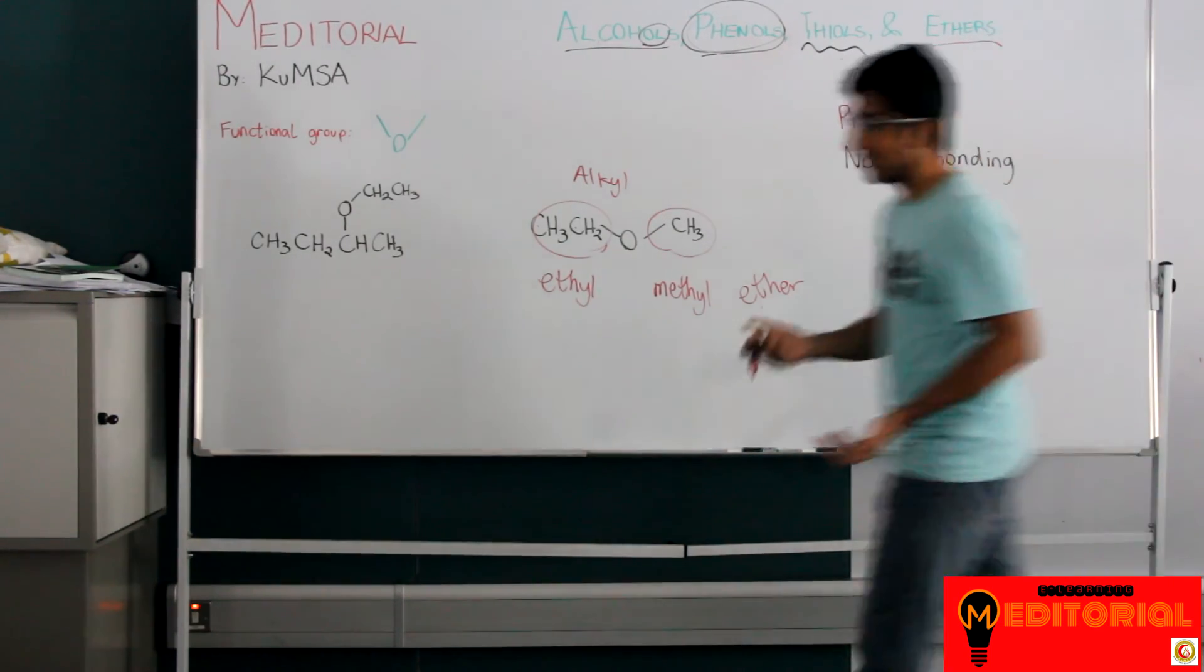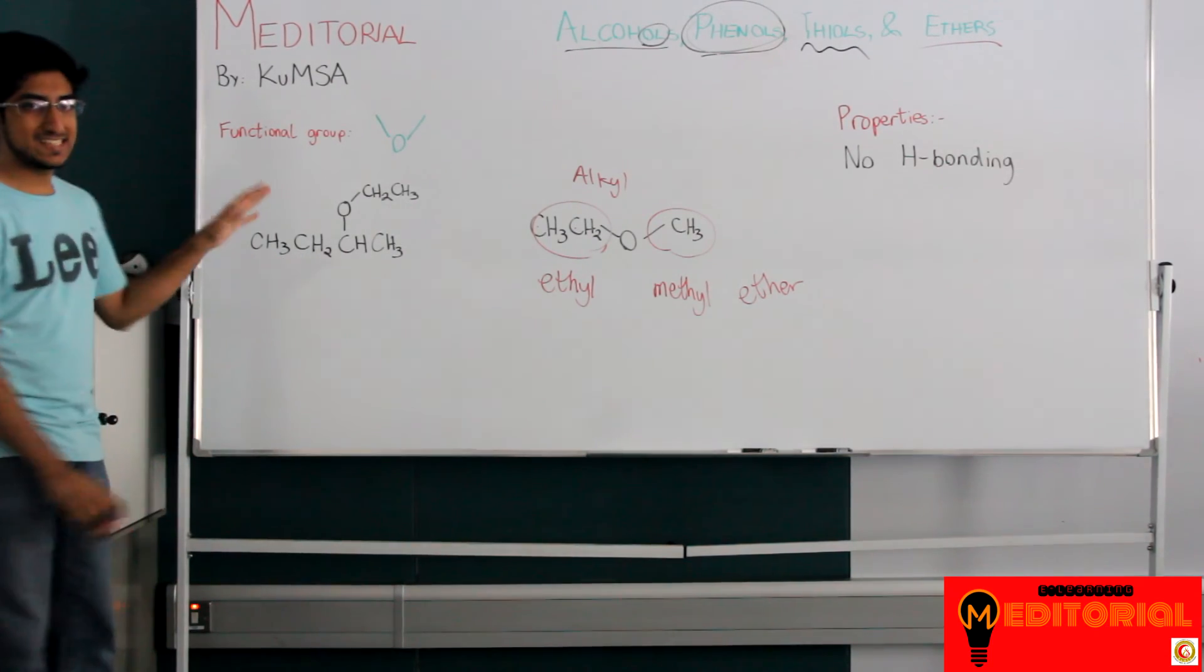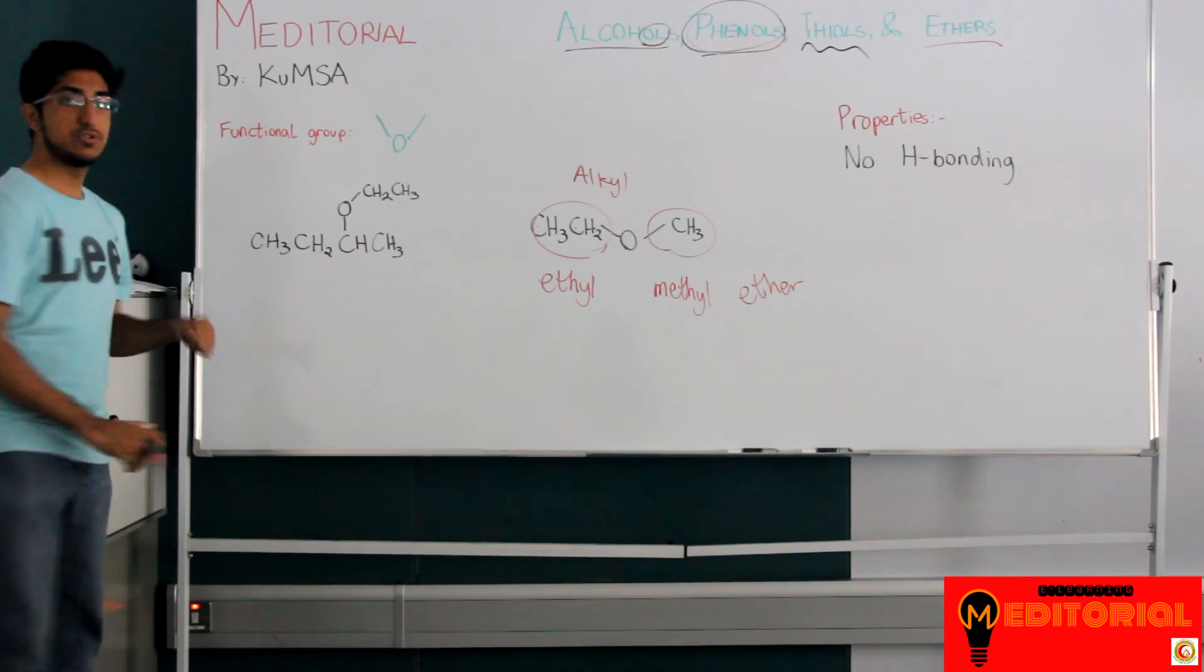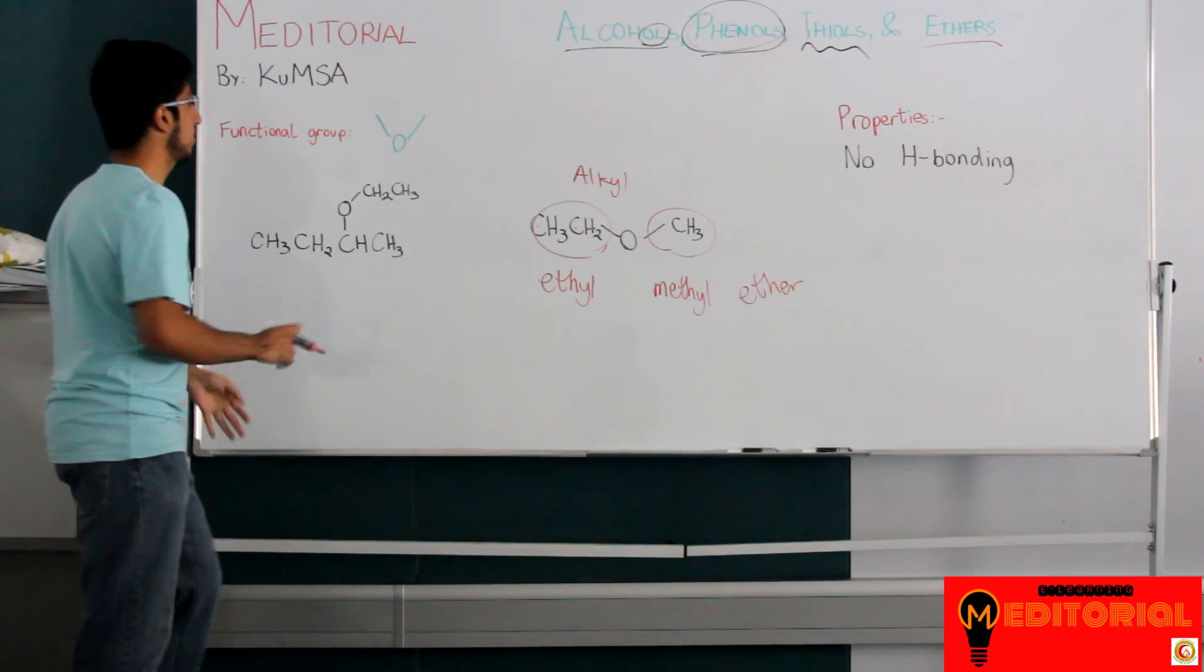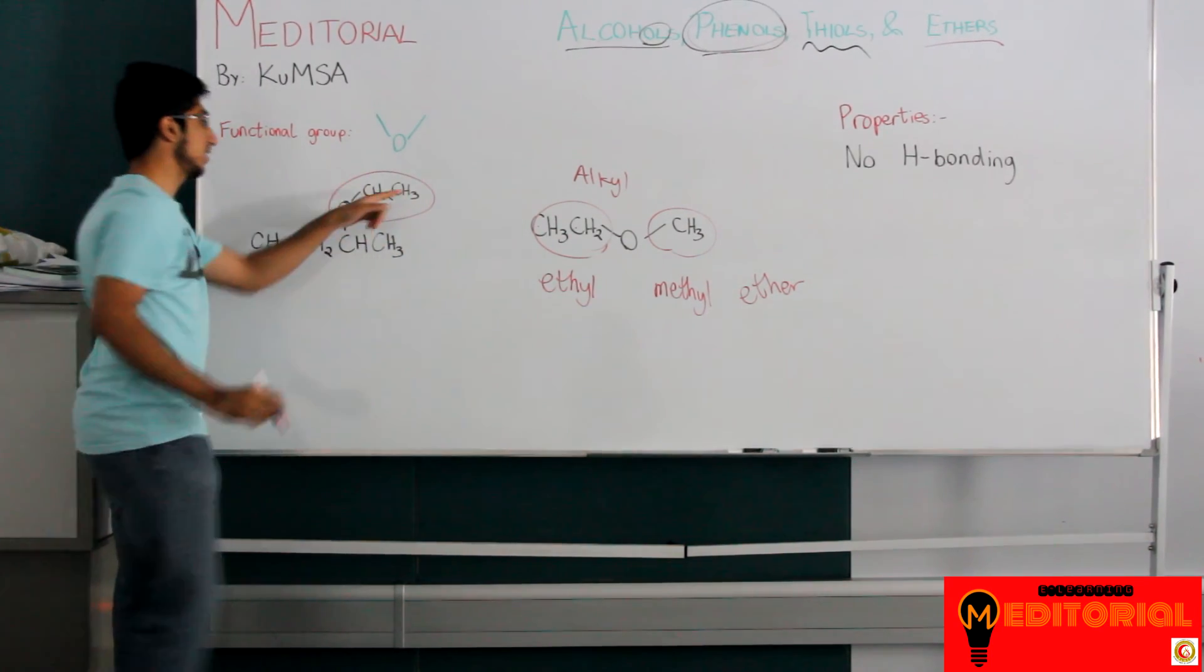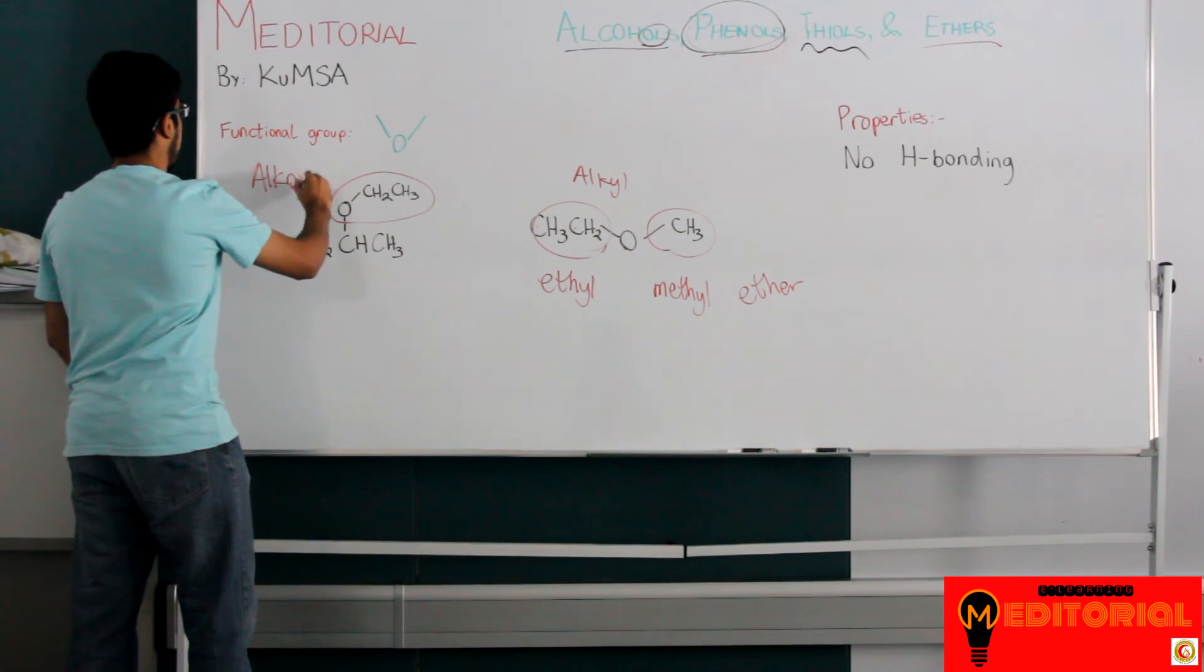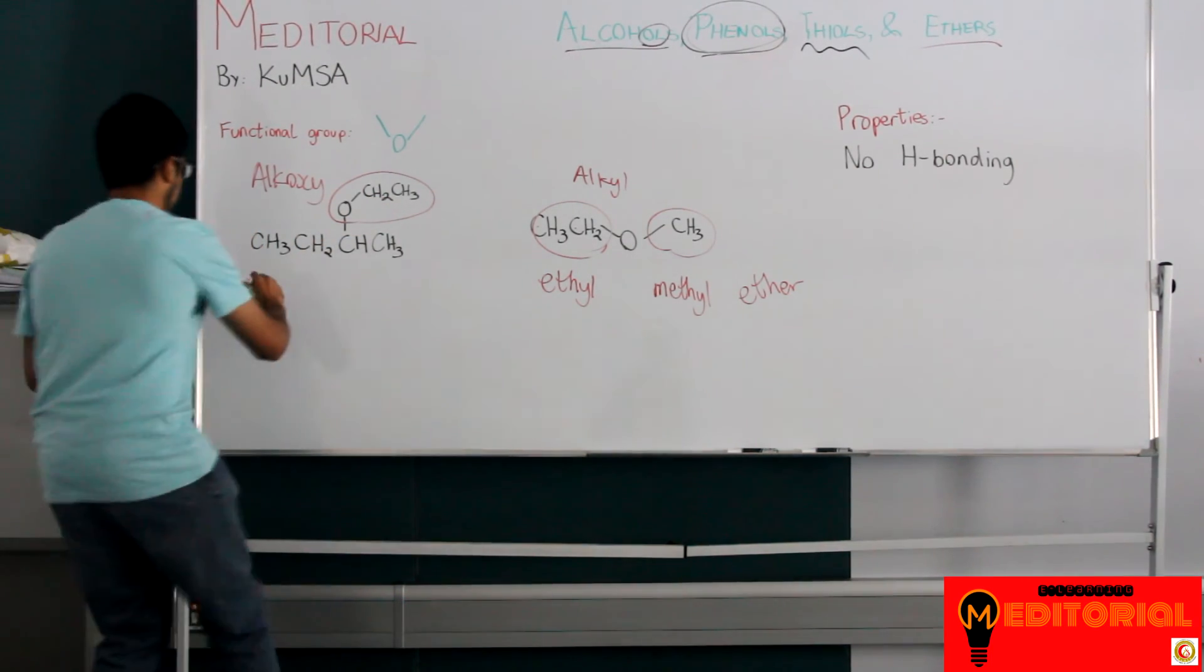The other way of naming it is when it gets a little bit more complicated. When you end up having something like this, when the chains get a little bit bigger, instead of using very big alkyl group names, for example, this would be isobutanyl. That's too complicated, too weird. I don't want to use that. Instead, what we can do is take the smaller group with the oxygen attached. That group is called an alkoxy group. An alkoxy group. So this is ethoxy.